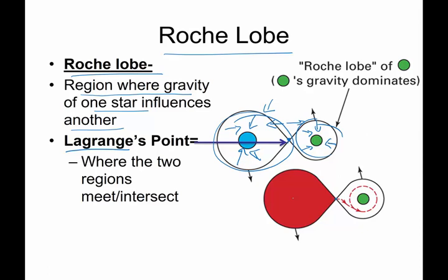When this red giant expands and expands and expands and expands to it gets beyond that Lagrange point, some of the matter from that red giant is going to get sucked in to that white dwarf which starts the process of producing a nova.